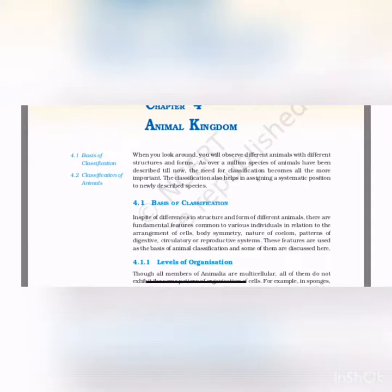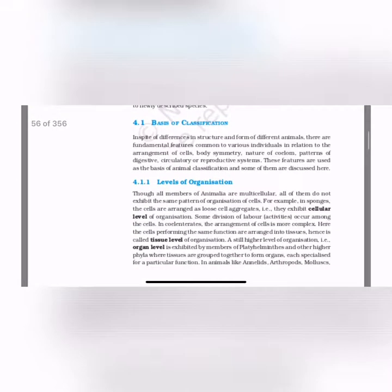Basis of classification: In spite of differences in structures and forms of different animals, there are fundamental features common to various individuals in relation to the arrangement of cells, body symmetry, nature of coelum — the central cavity — pattern of digestion, and circulatory and reproductive systems. These features are used as the basis of animal classification.